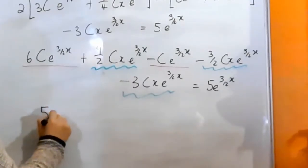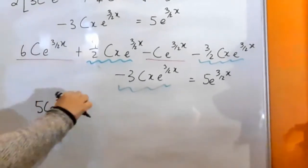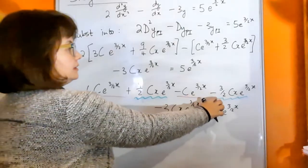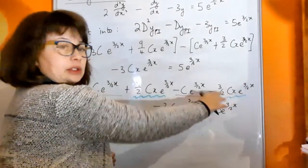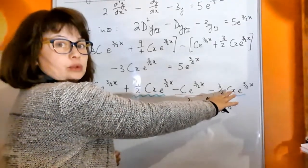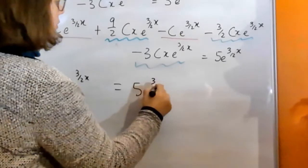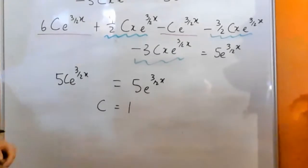Right, and then we add 9 over 2 minus 3 over 2 minus 3, and that is going to add up to 0. So this term actually falls away, and that's going to equal 5e to the 3 over 2x, which means that c in this case has to be 1.